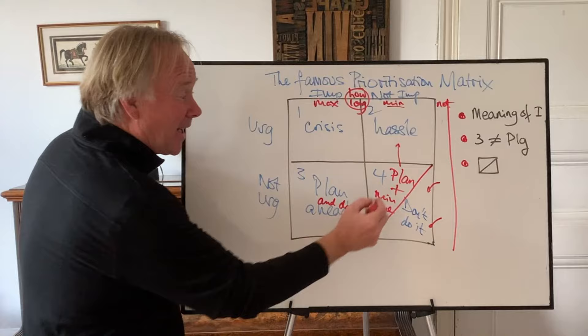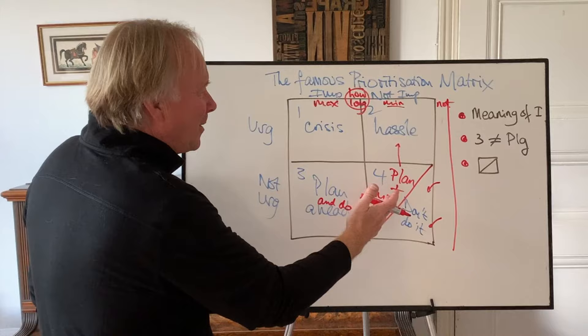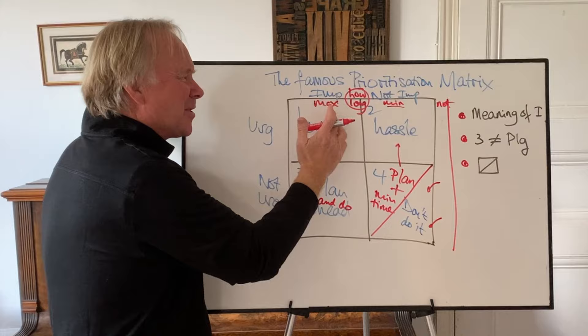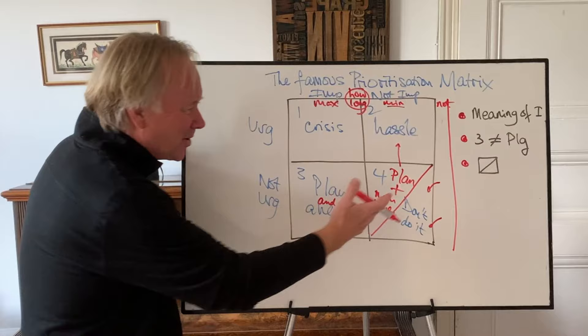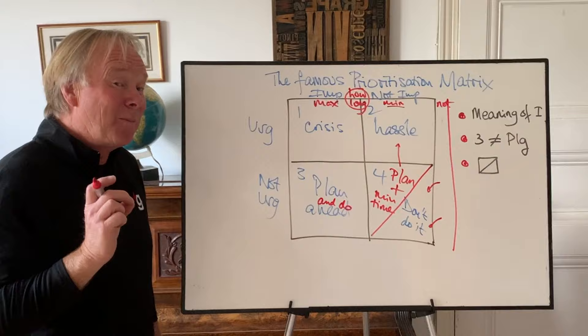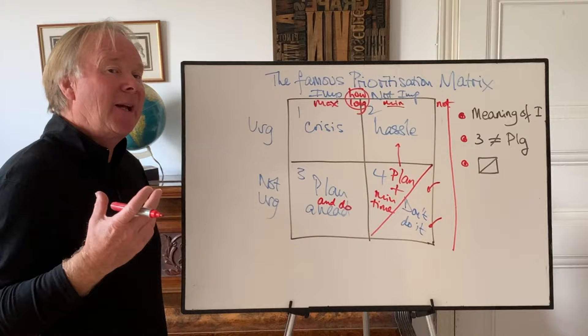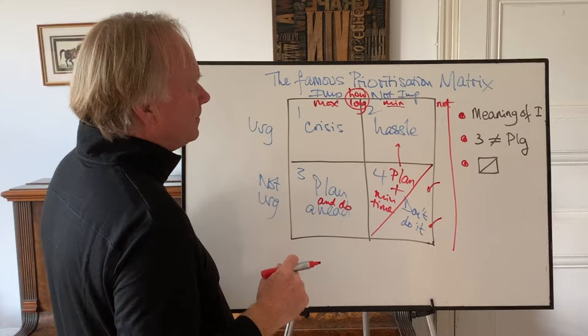There's a lot of stuff in that plan-plus-minimum-time category — housework, buying food, even going to the toilet: plan ahead, spend the minimum time. You don't want to wait until it's really urgent, but we can't claim it's important. Filing at work is in box four — plan it plus minimum time. A lot of paperwork and admin: plan it in, don't leave it till it's a hassle, but spend the minimum time. So those are the three additional layers I'd like to add to this famous four-box model: the meaning of importance, box three is not just planning, and box four is not just don't do it.